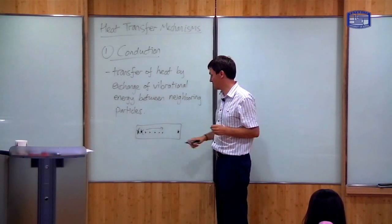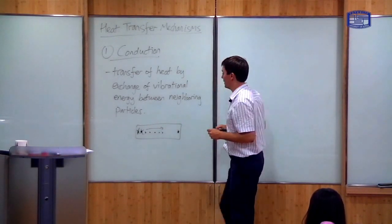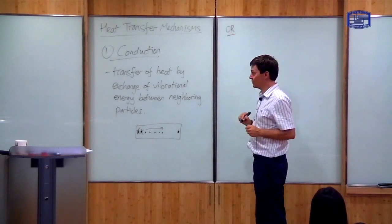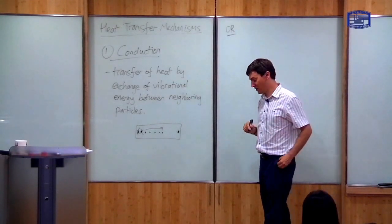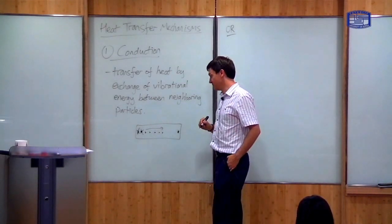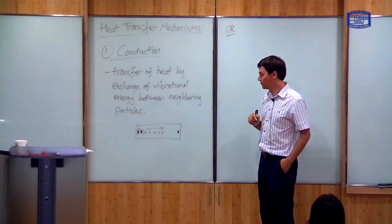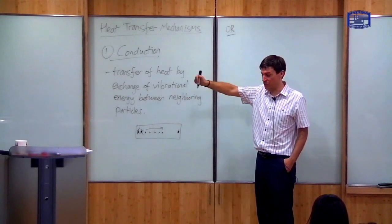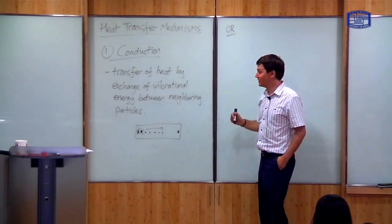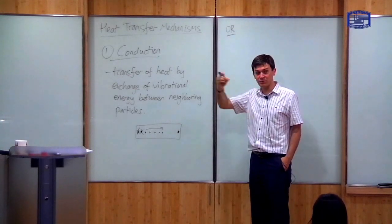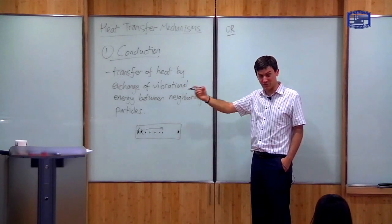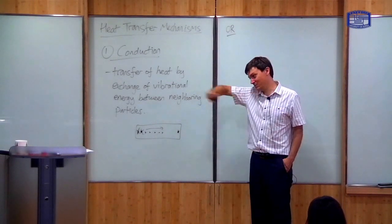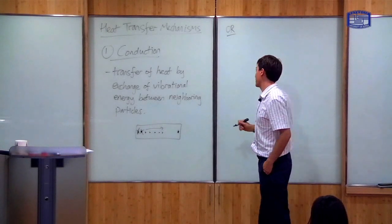Neighbouring particles interacting with each other transfer their kinetic and vibrational energy. There is another type of conduction which only occurs in metals. Metals have what are known as conduction electrons — electrons which can travel over the whole of the metal, and these electrons are free to move. A fast-moving electron in one part of the metal can move to another part and thereby transfer energy.